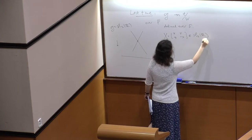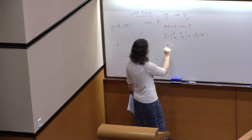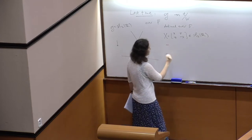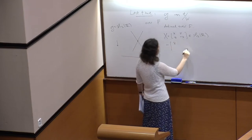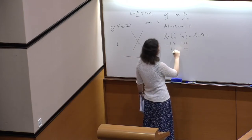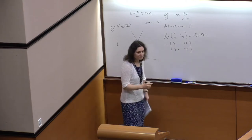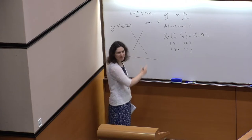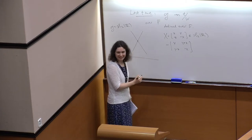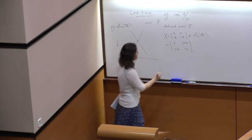For the Lie algebra we can do a small change of coordinates — write it as x, negative x, y plus z, y minus z — just a rotation in the y-z coordinates. Then the Chevalley map is given by the determinant of this.